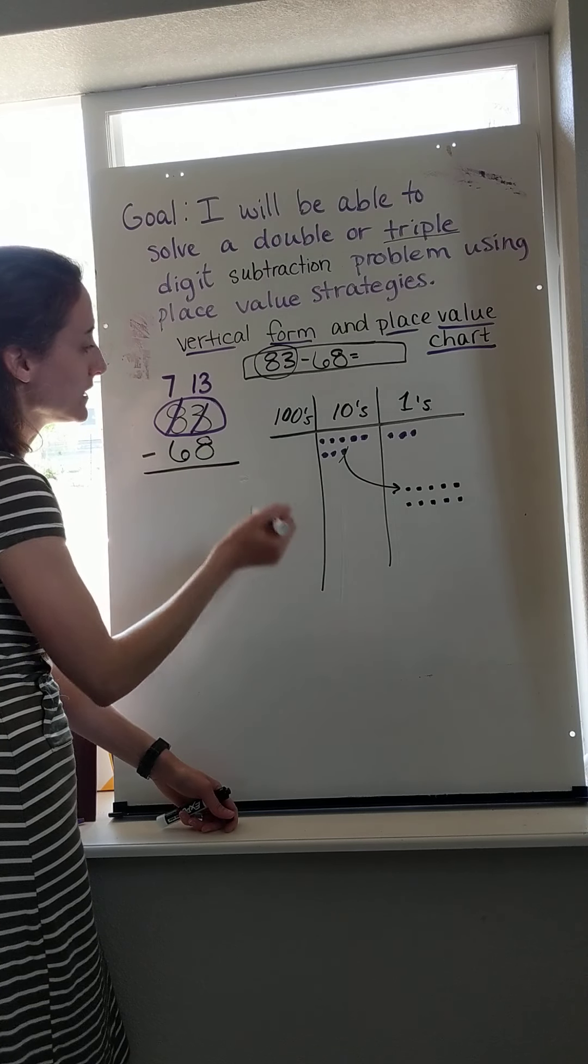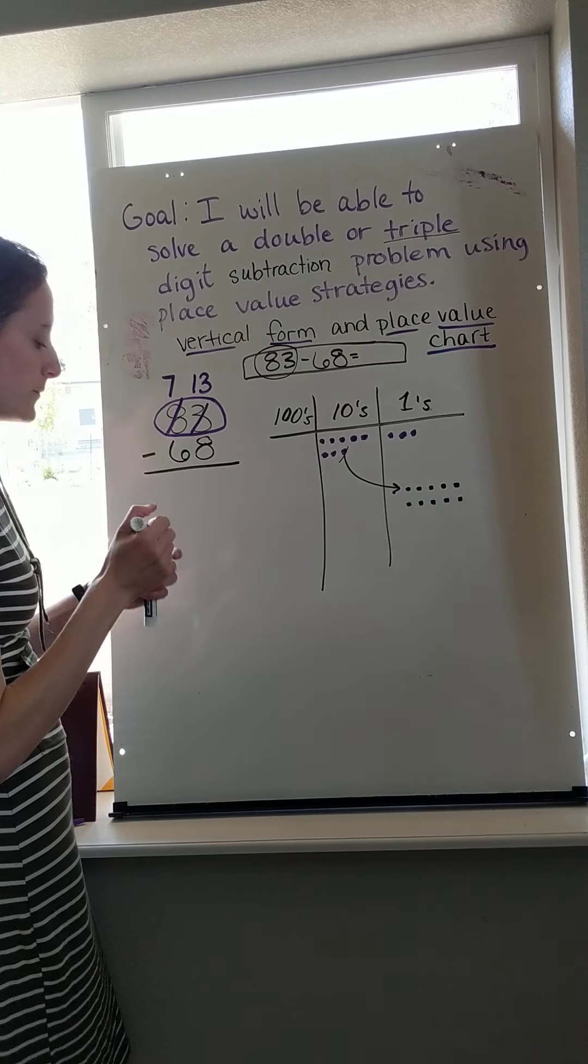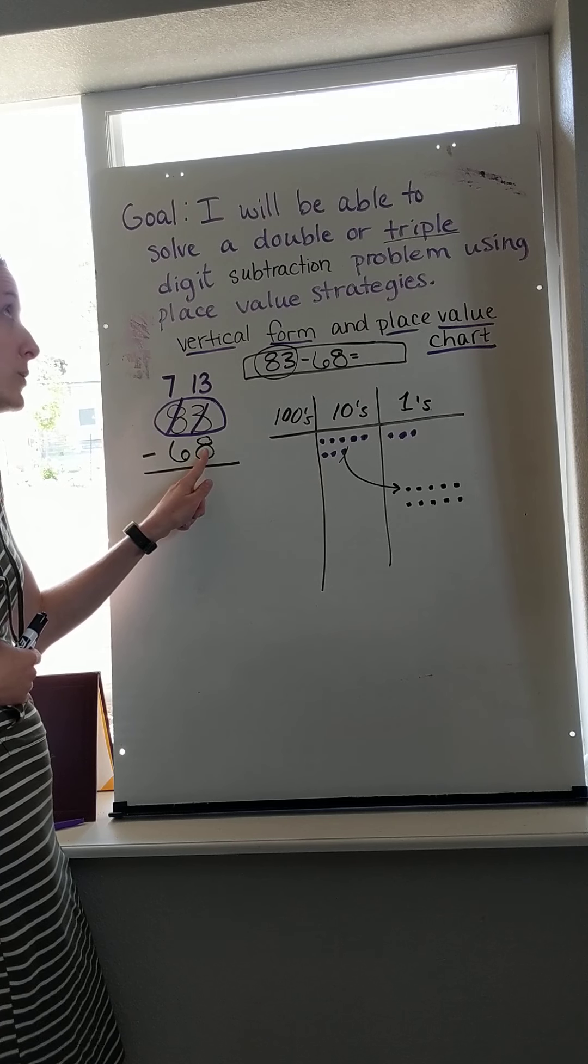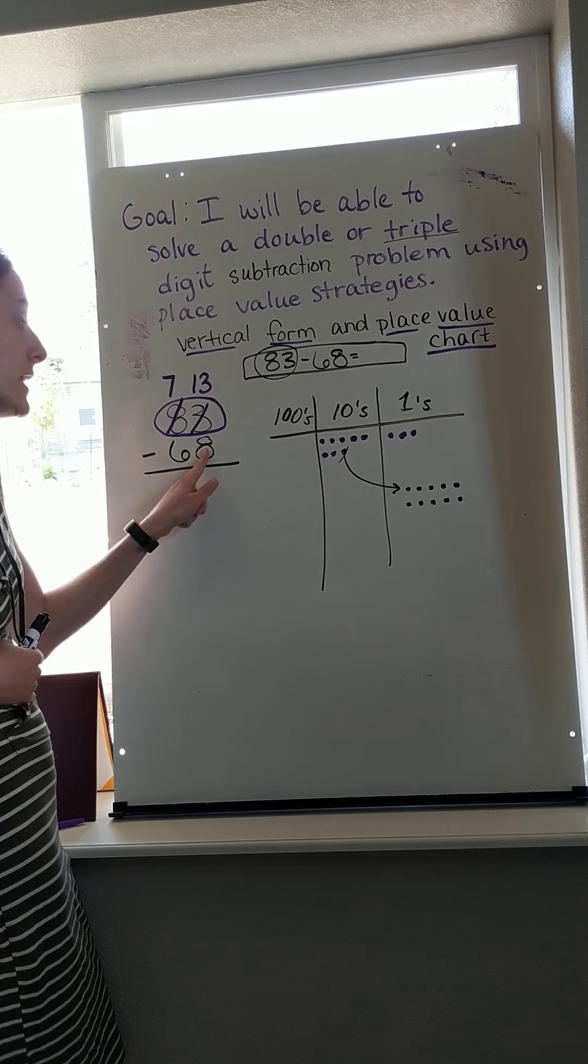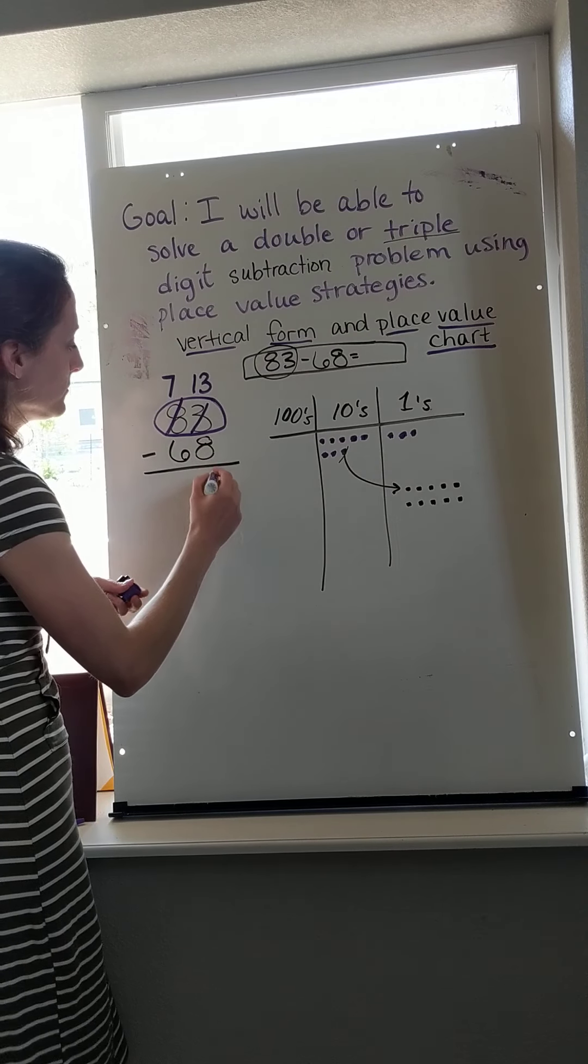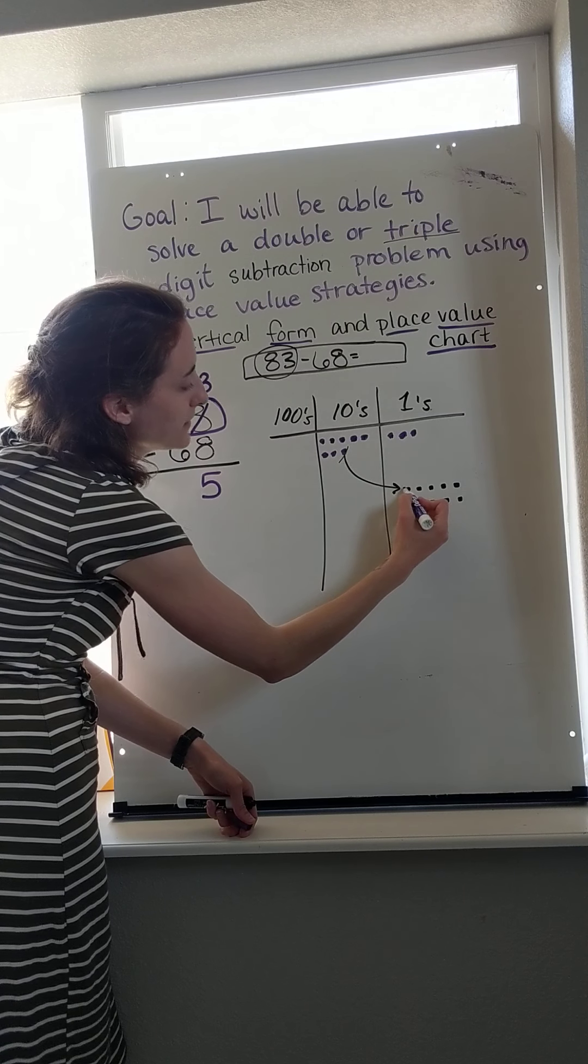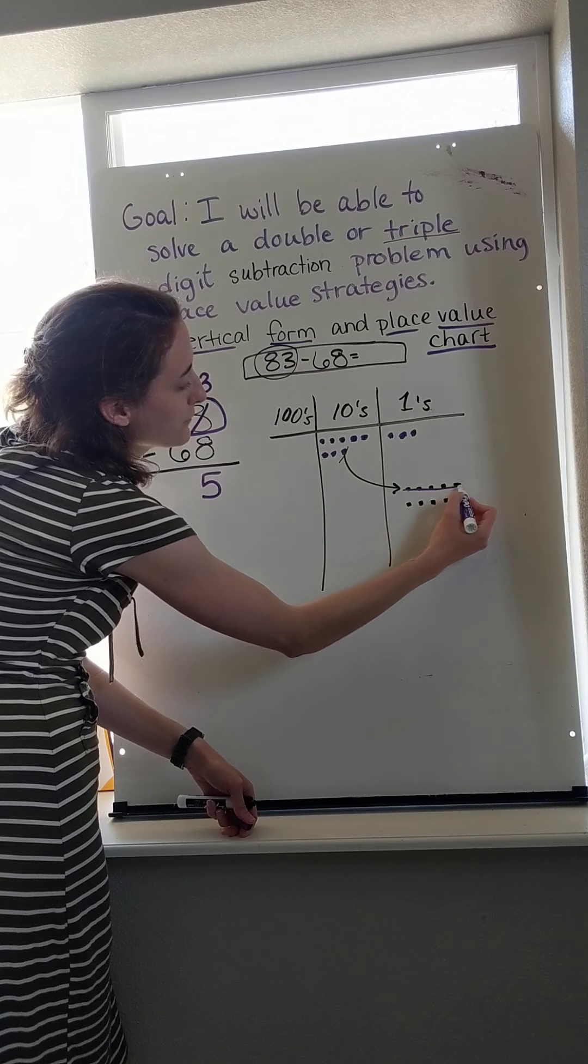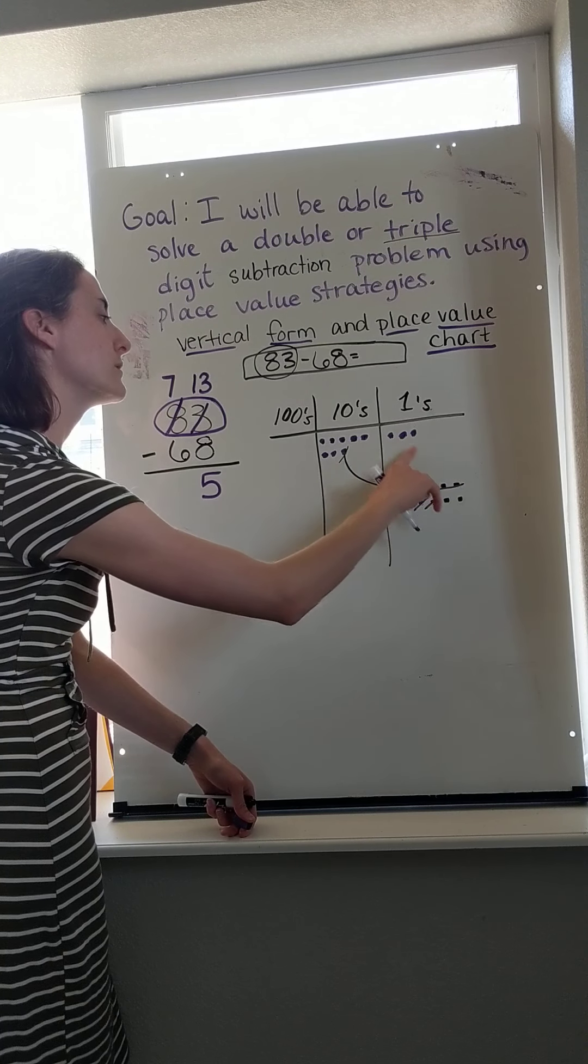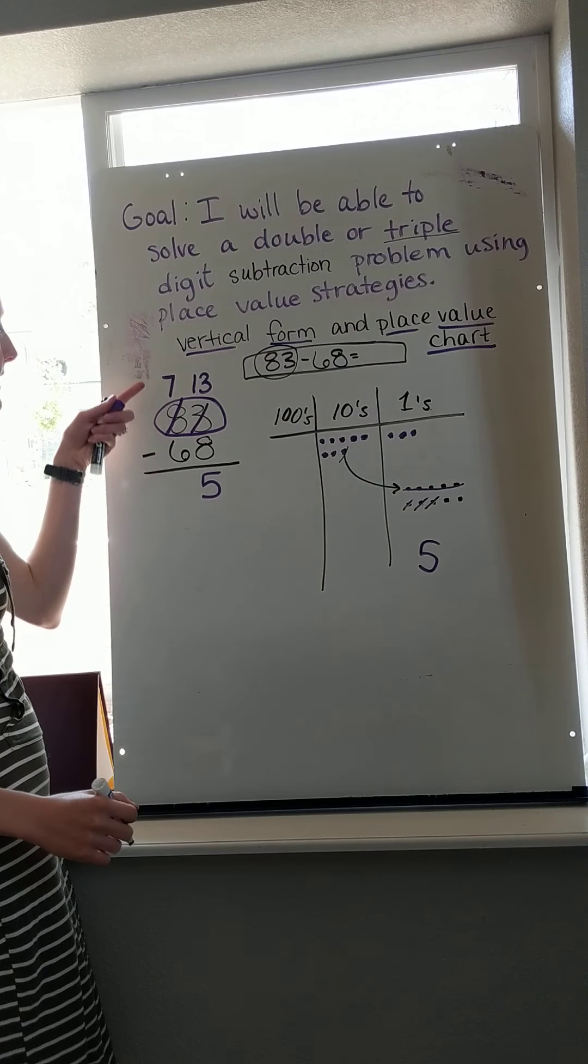Now I do thirteen minus eight and I say, eight plus what makes thirteen? Eight, nine, ten, eleven, twelve, thirteen - five. Thirteen minus eight, cross out eight: 1, 2, 3, 4, 5, 6, 7, 8. What's left? 1, 2, 3, 4, 5. Yes, I did it right.